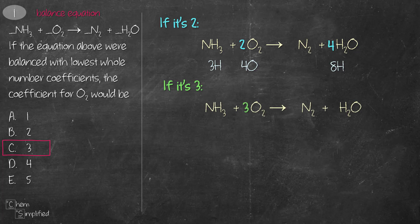With 3 in front of O2 we get 6O. To balance 6O we place a 6 in front of H2O giving us 12H. To balance 12H on the left we place a 4 in front of NH3 giving us 12H and 4N. To balance 4N on the right we place a 2 in front, giving us 4N. This also gives us 3 in front of O2, confirming C. Use whichever method works better for you.